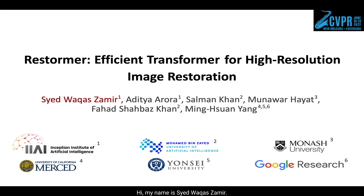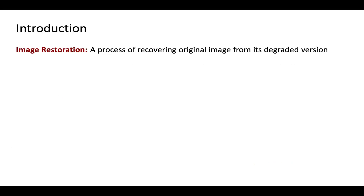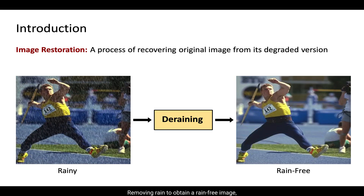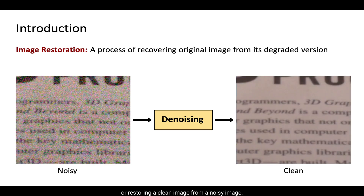Hi, my name is Seyed Vakal Zemir. I will present a transformer model for image restoration. Image restoration is the task of recovering an original image from its degraded version. For example, recovering a sharp image from its blurred version, removing rain to obtain a rain-free image, or restoring a clean image from a noisy image.